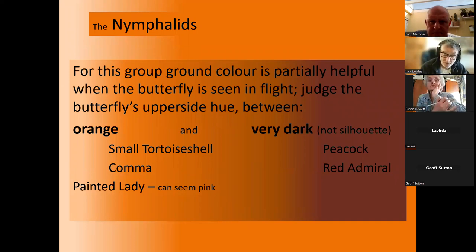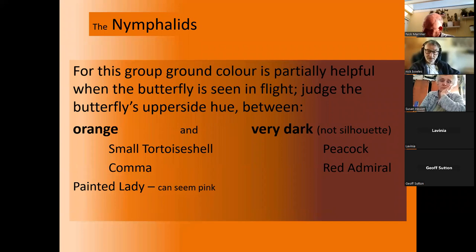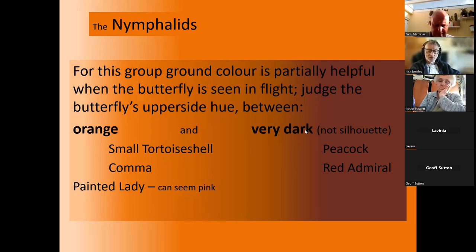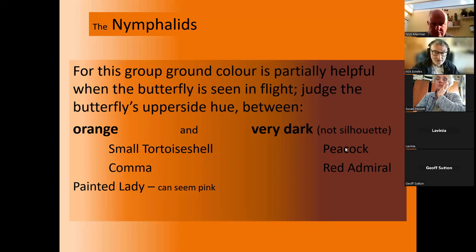We're going to start with the nymphalids — the group that includes things like the tortoiseshell and red admiral. A very quick look as it flies in and settles: decide is it basically at the pale orange end of the scale, which means it's almost certainly small tortoiseshell or comma, just possibly painted lady? Or is it very dark, which is more likely to be peacock or red admiral? If it flies past and keeps flying, you can still decide based on whether it seemed orange or darker, though sometimes you can't identify everything that flies past.